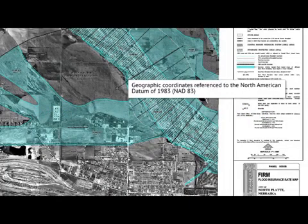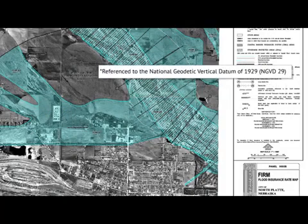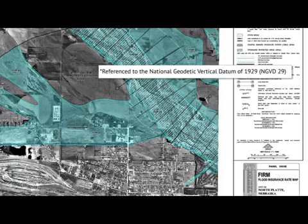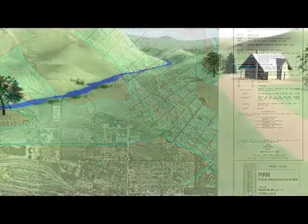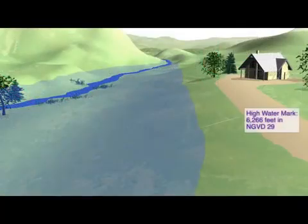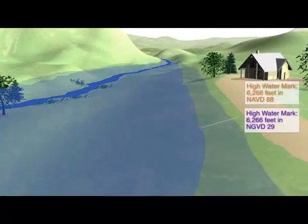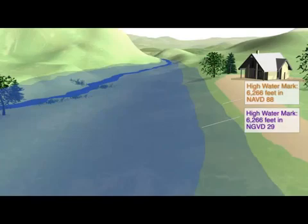Datums are commonly referenced on federal floodplain and topographic maps. Sometimes an older vertical datum for the United States is used rather than NAVD88. In some areas of the country, especially in the West, differences between some vertical datums can be as much as 3 to 4 feet. This is pretty significant if you're trying to figure out if your house is in a floodplain.